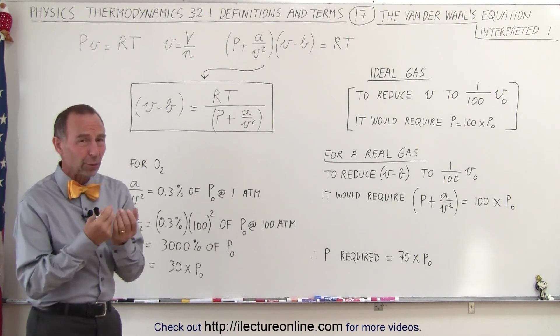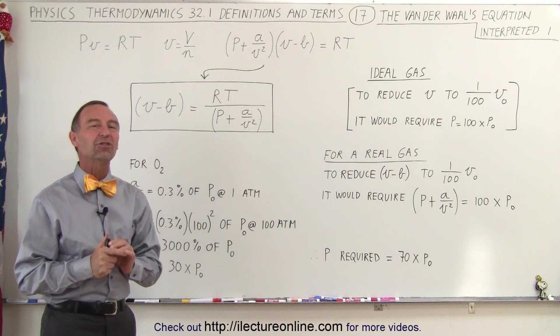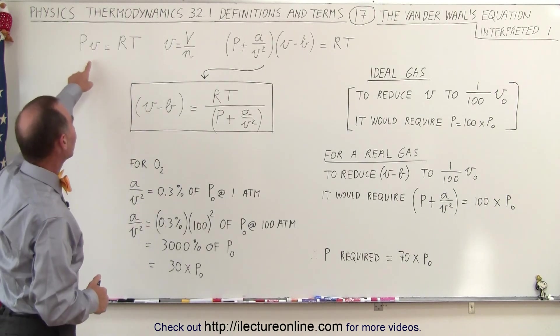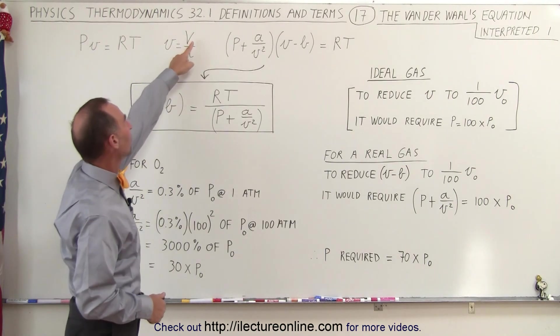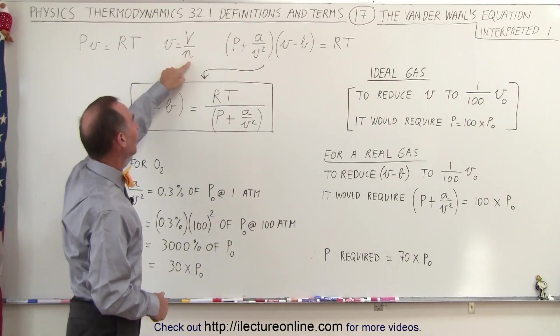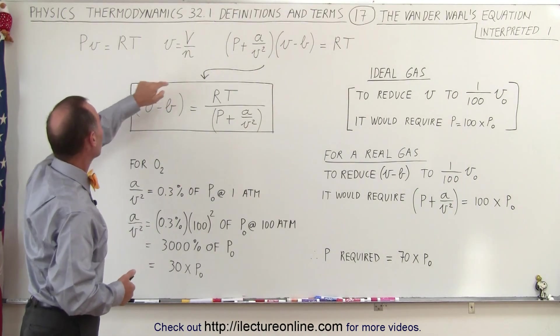Again, the Van der Waals equation is sometimes very difficult to wrap your brain around because so many things are changing at the same time. But if you look at the standard or ideal equation, and we replace v by v̄ = v/n, in other words, this is the volume per number of moles,